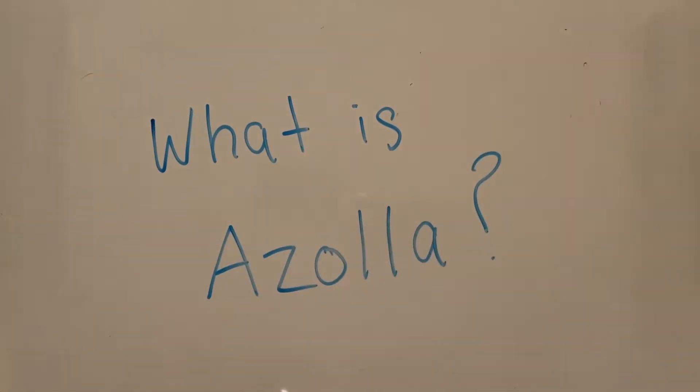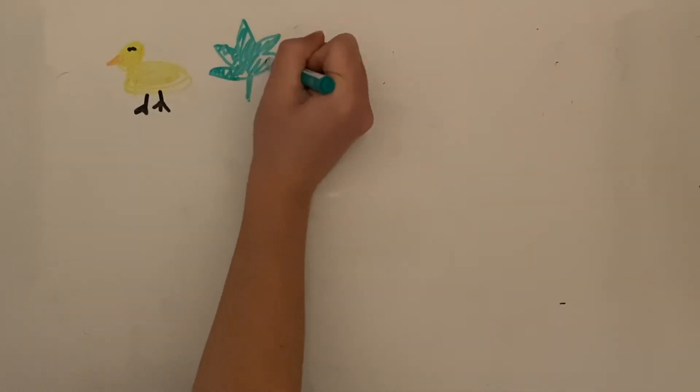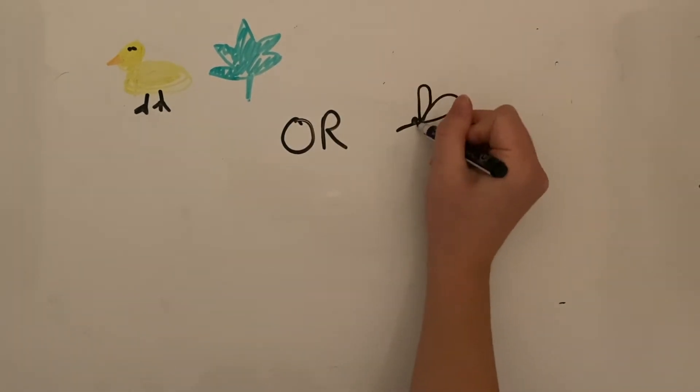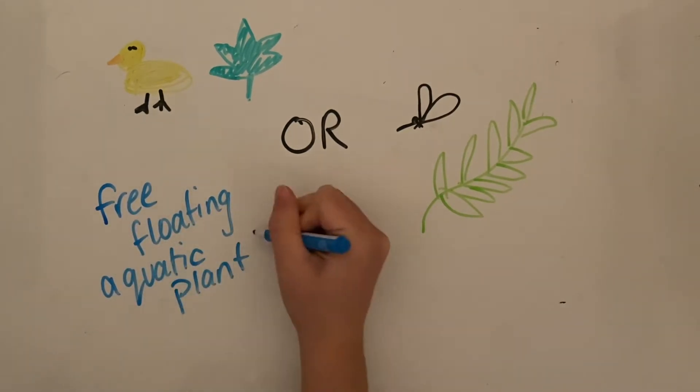What is Azola, you might ask? Azola is sometimes called duckweed or mosquito fern. It is a free-floating aquatic plant which means that it grows on the surface of water while its stems float underneath.